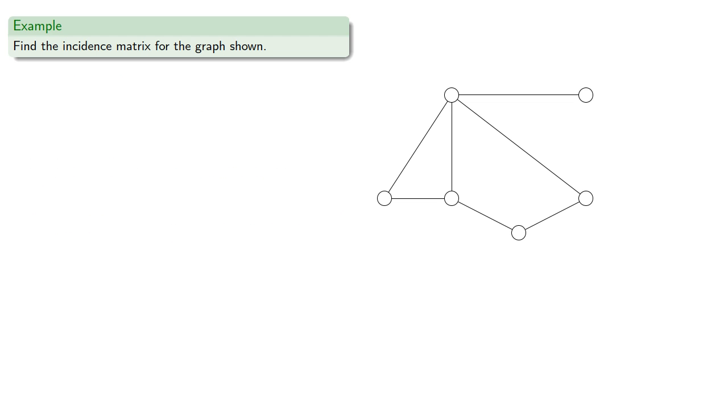For example, let's try to find the incidence matrix for the graph shown. Note that we need to number the vertices, and it doesn't really matter how we number them as long as we do number them. So we'll do that. And also the edges. And again, it doesn't really matter how we label them.